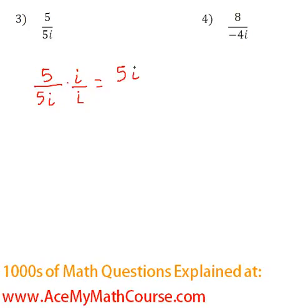So 5i on top, all over 5 times, now i times i is i squared.